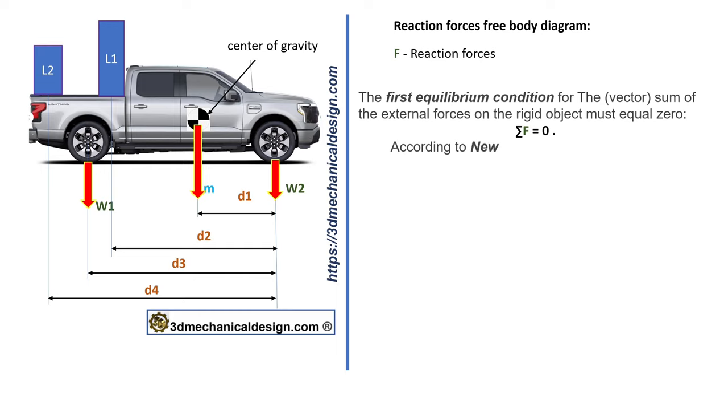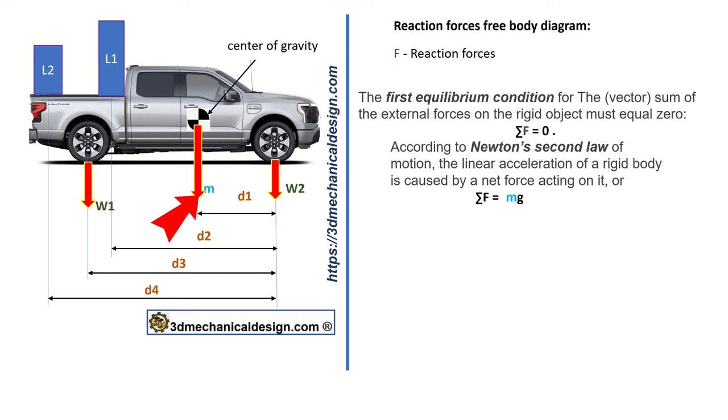According to Newton's second law of motion, the linear acceleration of a rigid body is caused by a net force acting on it. The sum of forces equals M times g plus L1 plus L2. G, acceleration due to gravity, is 9.81 meters per second squared. Fm equals 2956.17 times 9.81 equals 29,000 newtons.